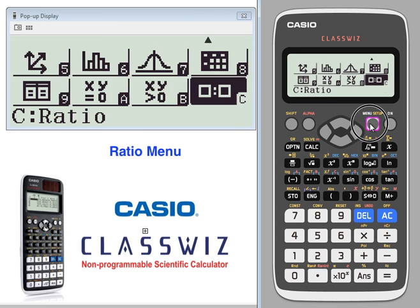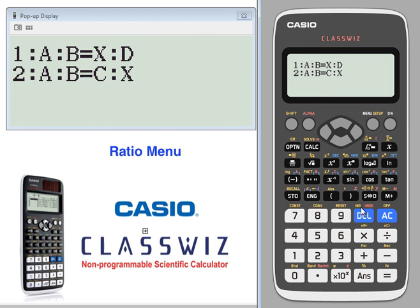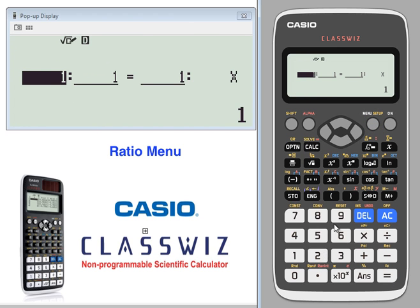Let's try a different one. We'll go 2. This time, it's 2 to 5 as 7 is to X. In this case, X is the second unknown.